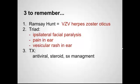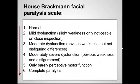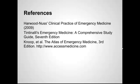Three to remember: Ramsey-Hunt is the other name for varicella herpes zoster oticus, otherwise herpes zoster of the ear. The triad is ipsilateral facial paralysis, some pain in that ear, and that vesicular rash in and around the ear. Treatment is antiviral, some steroids, and symptom management. I also want to throw in the House-Brackmann facial paralysis scale — something useful to look up on a shift to describe the type of paralysis in your note. Thanks again for joining us on EM in 5. We look forward to seeing you next week.